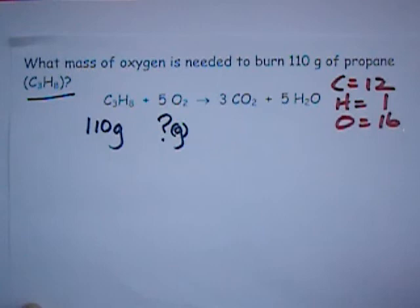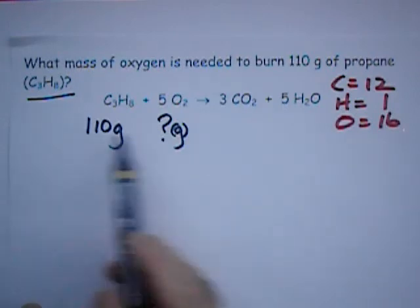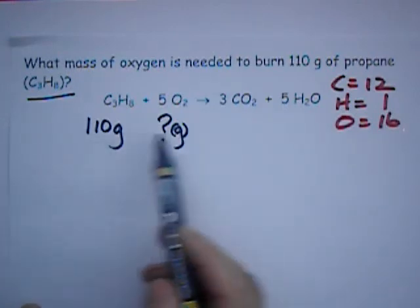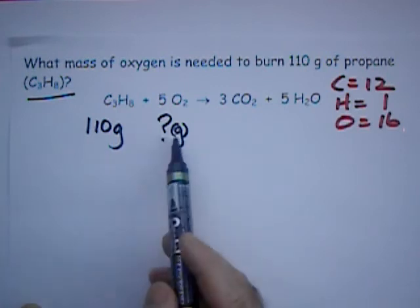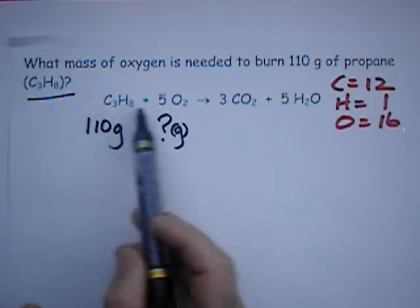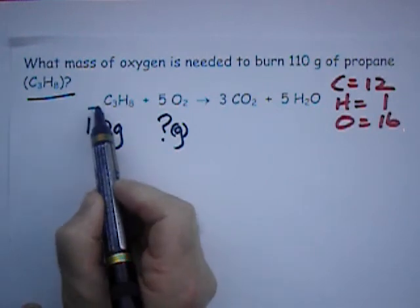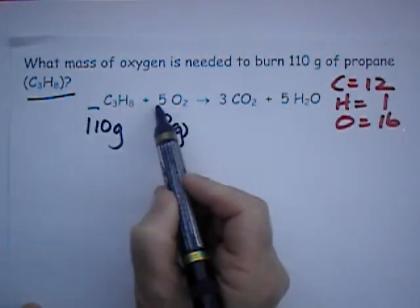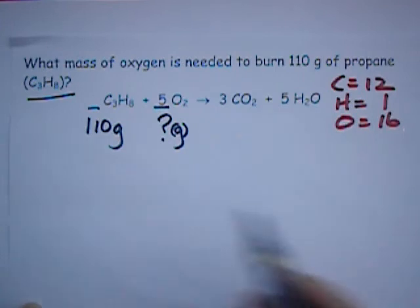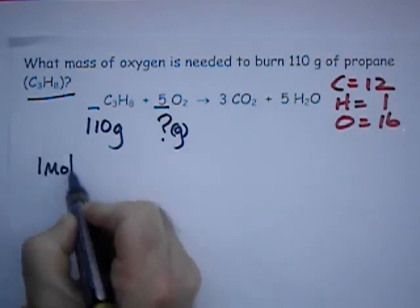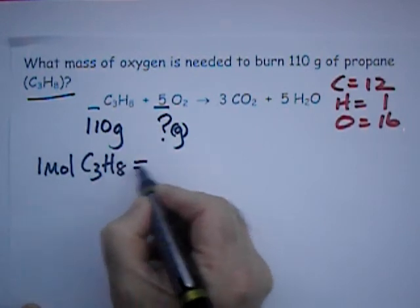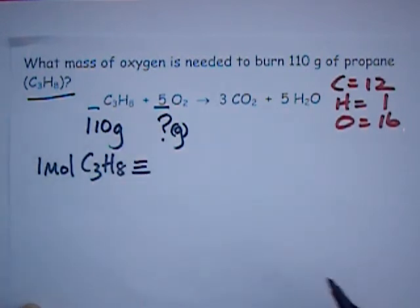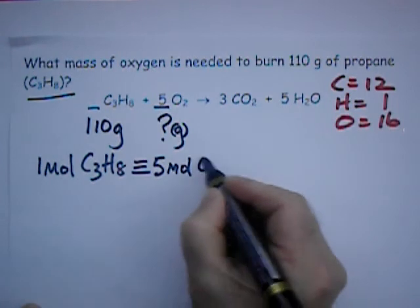To begin with, we make an equivalence between what we're given and asked. We're given information about this chemical, asked information about this chemical. We make an equivalence between these two, using the numbers in the balanced equation. No number here, so it's taken to be one mole of this chemical reacts with five moles of this chemical. That allows me to write that one mole of C3H8 is equivalent to, or in this case requires, five moles of O2.